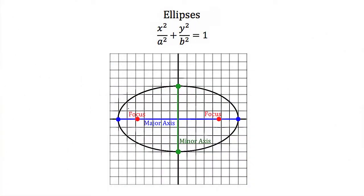Now let's talk about some terminology. Every ellipse has two axes of symmetry. In this example, one axis of symmetry is the x-axis and the other is the y-axis. Whichever direction the ellipse is stretched more is our major axis — in this example, the x-axis. The minor axis, or smaller axis, is the y-axis. At the ends of both axes we have vertices. At the ends of the major axis these are called major axis vertices, or simply vertices. At the ends of the minor axis we have minor axis vertices, sometimes called co-vertices.